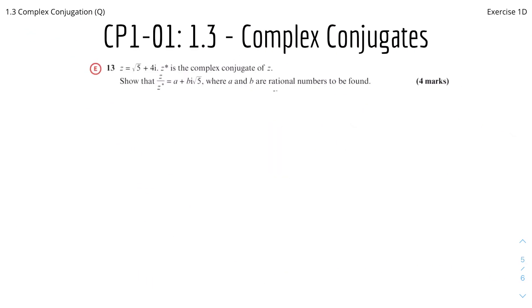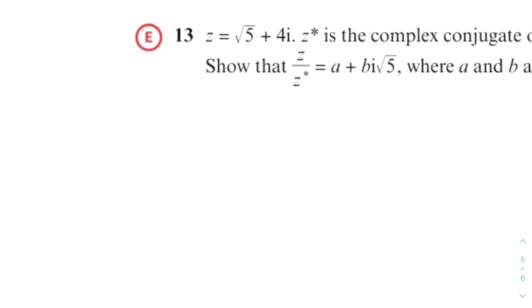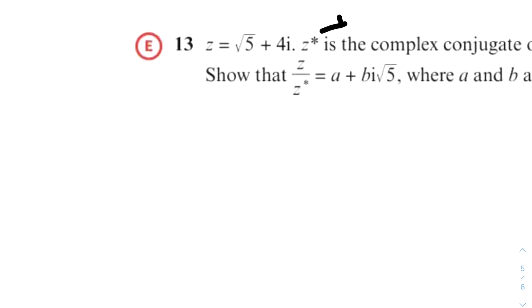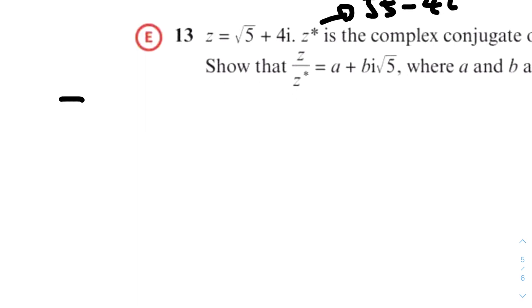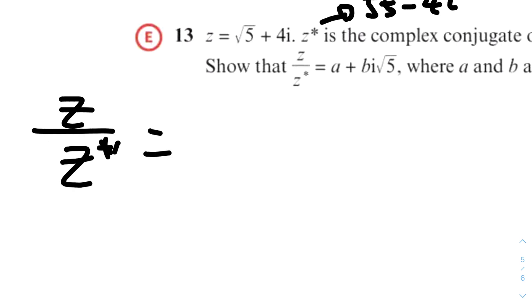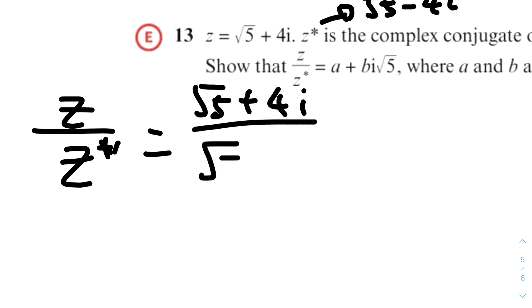The next question: z = root 5 + 4i, and z asterisk is the complex conjugate of z. Show that z / z* equals a + bi√5 where a and b are rational numbers to be found. We know z = √5 + 4i, therefore z* = √5 - 4i. So z / z* = (√5 + 4i) / (√5 - 4i).